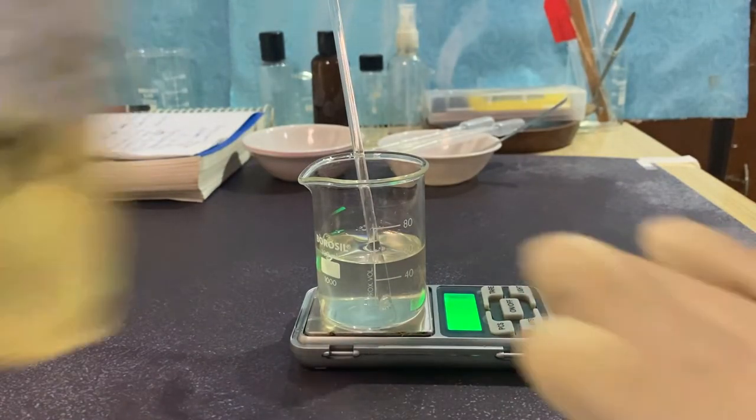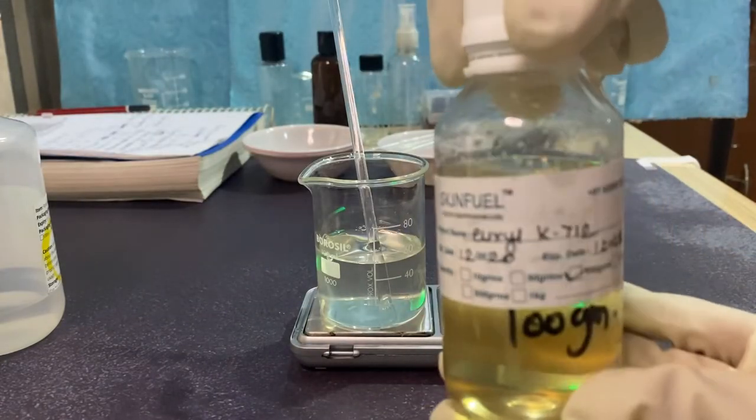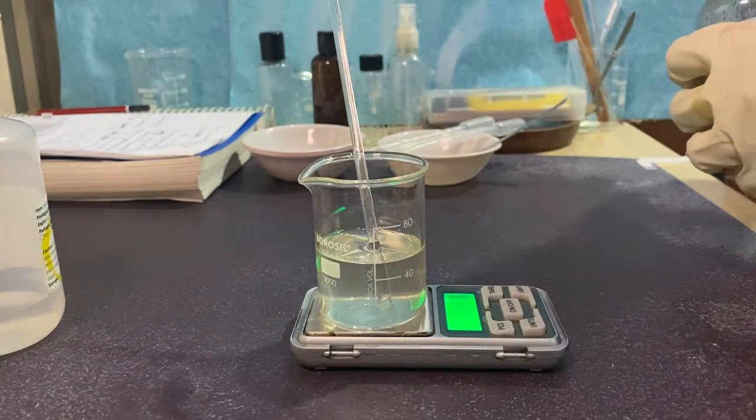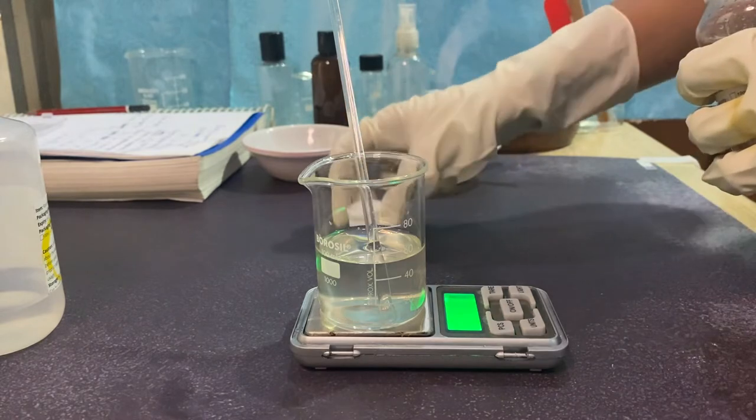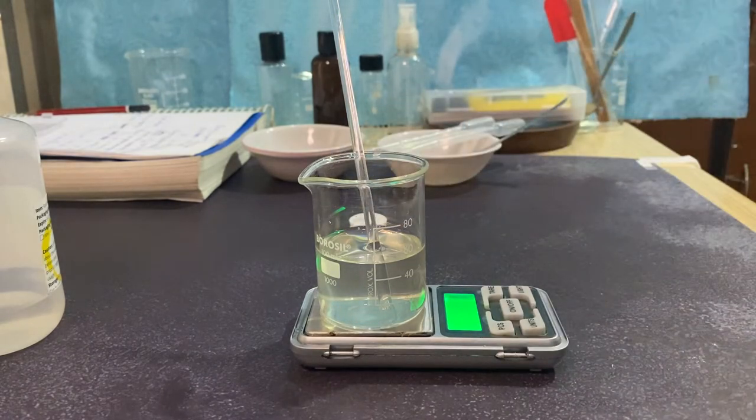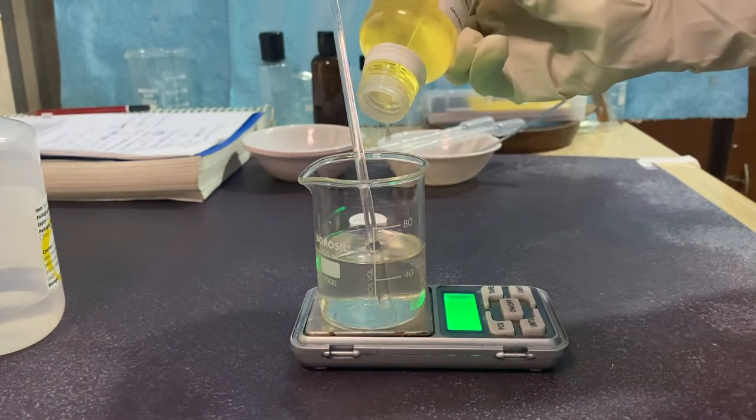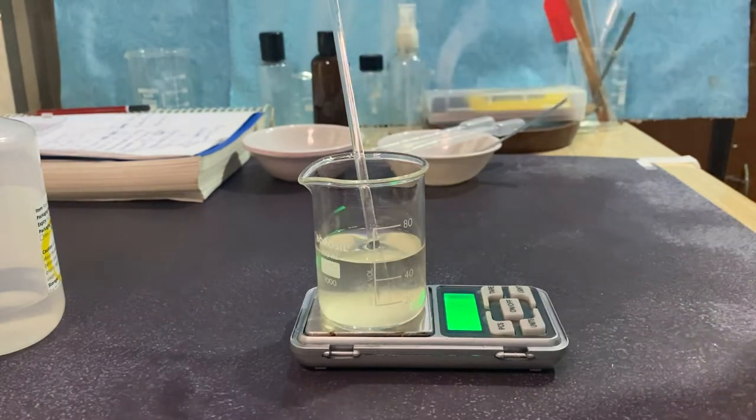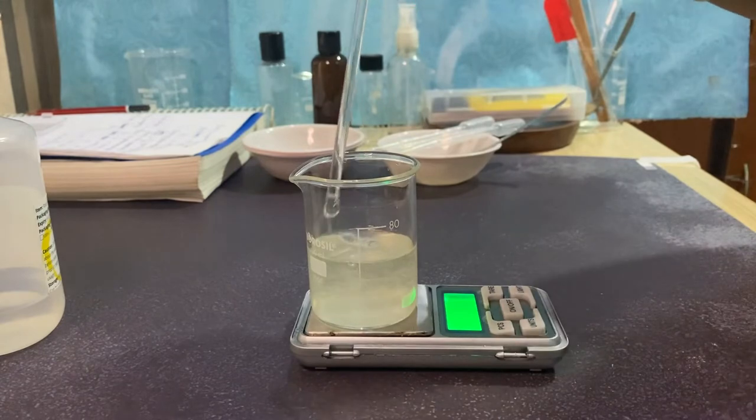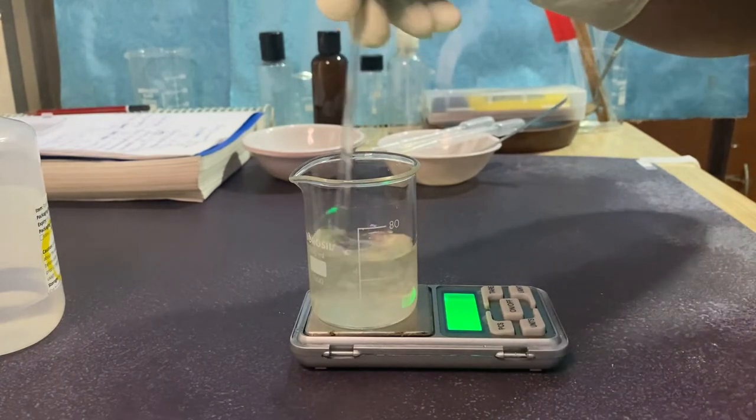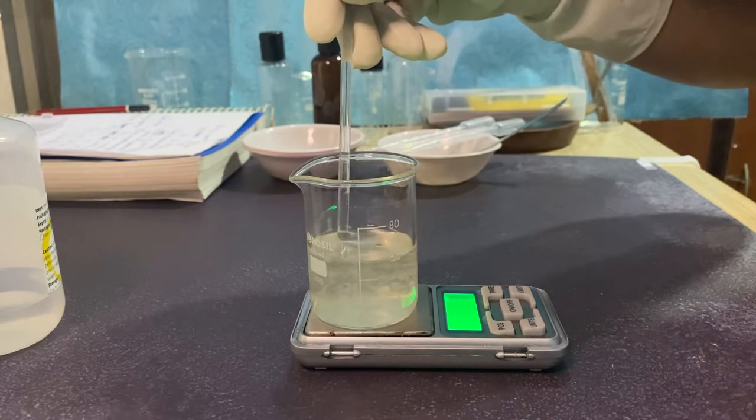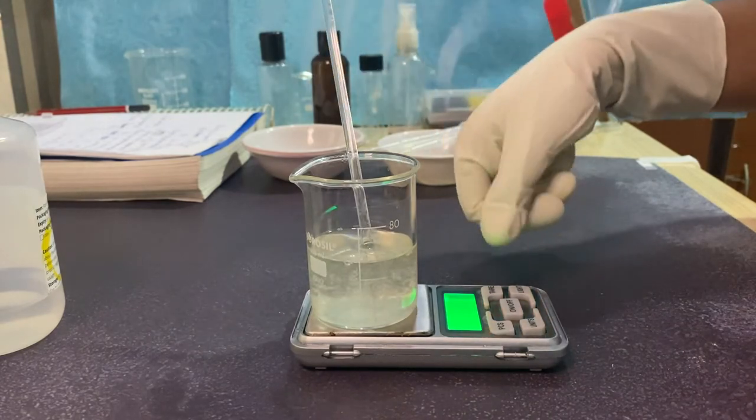And now the last one, Euxyl K 712 preservative of 0.75 grams. This is water-soluble preservative. You can see some tiny droplets inside. The pH is extremely low, so we need to bring the pH up so that it is mixed evenly.